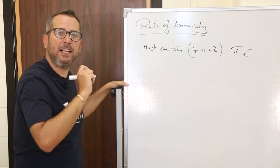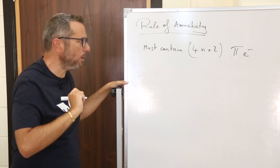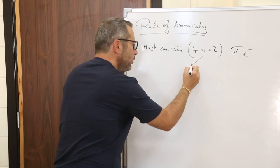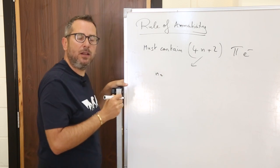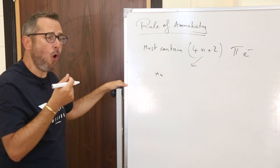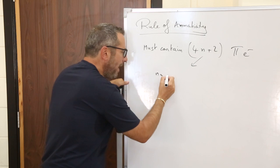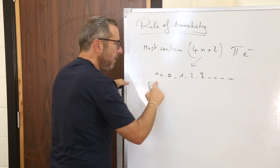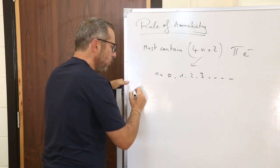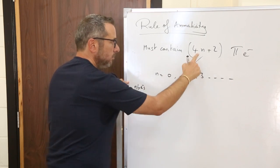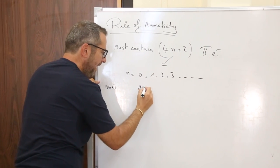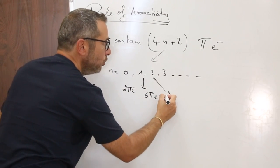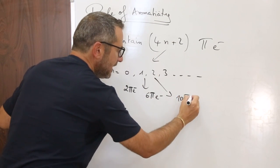Pi electrons are the electrons of double and triple bonds. What is 4N+2? N is a whole number: 0, 1, 2, 3, etc. If N equals 0, that gives 2 pi electrons. If N is 1, that gives 6 pi electrons. If N is 2, that gives 10 pi electrons, and so on. So you take your molecule, count the number of pi electrons. If it is 2, 6, 10, etc., it is aromatic. If not, it is not aromatic.